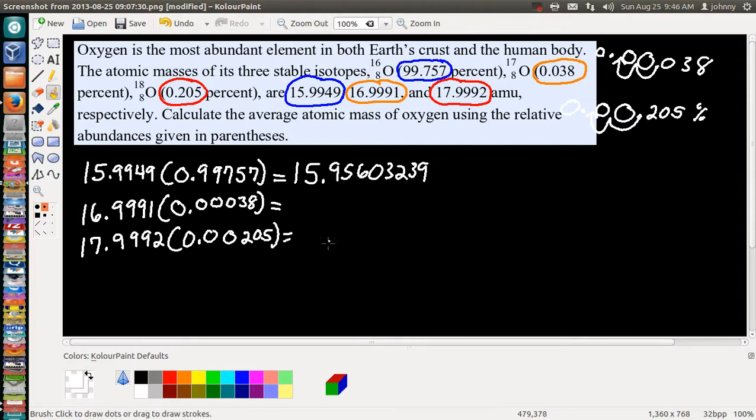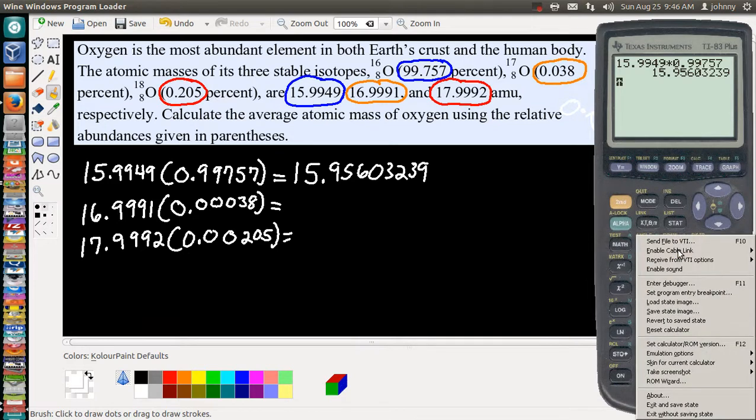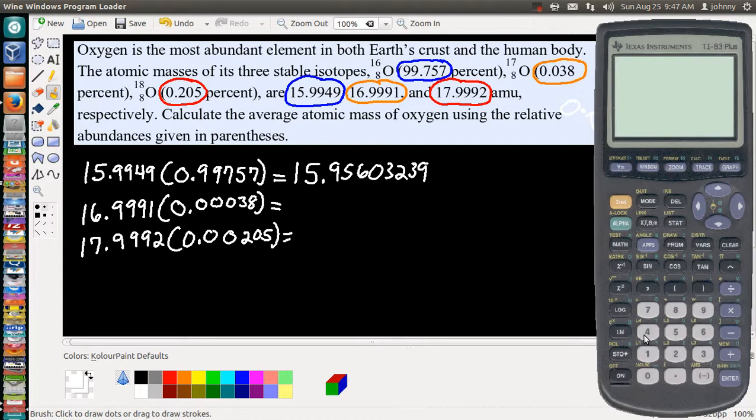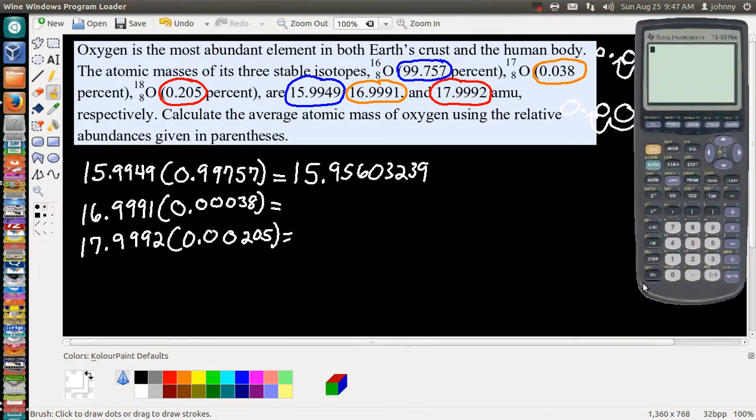Once again, we need to do the same with the next one. We have 16.9991 times 0.00038. The calculator's not responding, I need to reset it. Give me a second folks while I reset the calculator. It was becoming unresponsive, that happens from time to time. We have 16.9991 times 0.00038, press Enter. We get 0.006459658.